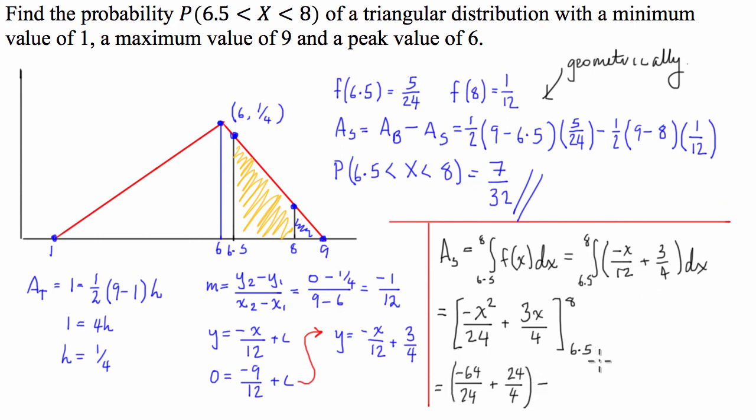And from that, I'm going to subtract it evaluated at 6.5. 6.5 squared, and then we're going to divide that by 24, is equal to negative, so 169 over 96, plus 6.5 times 3 divided by 4 is going to be 39 over 8.